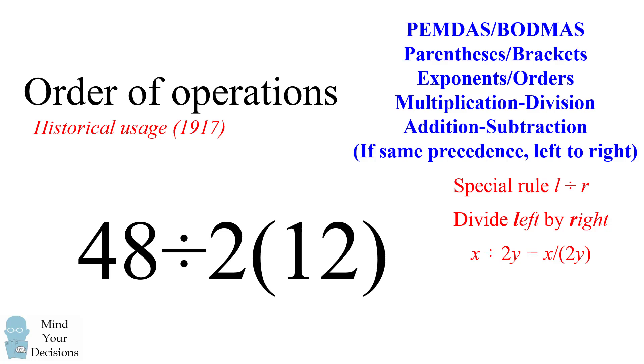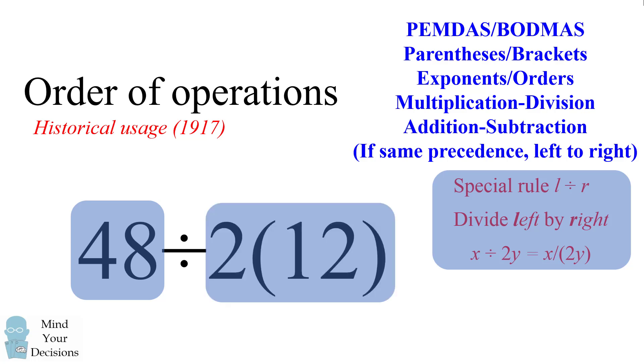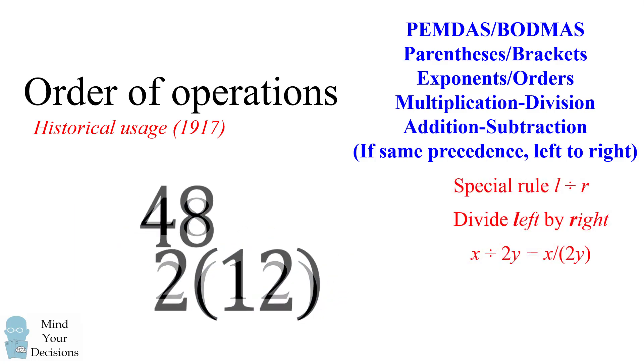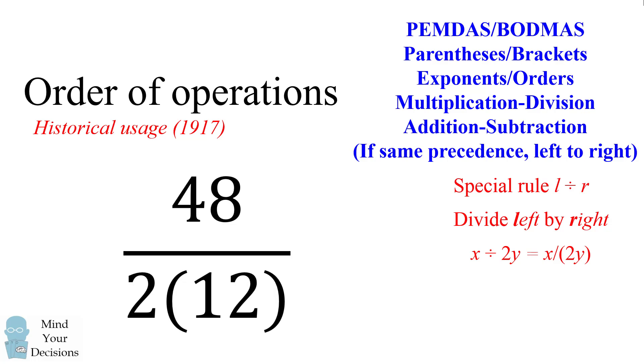So if you were to use this historical interpretation, how would we evaluate our expression? Using this special rule, we have something on the left, which is 48, and something on the right, which is 2 parentheses 12. So if we group the terms on the left and the right, we then have 48 over 2 times 12.